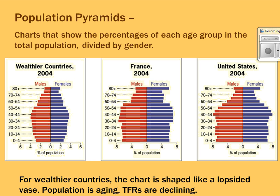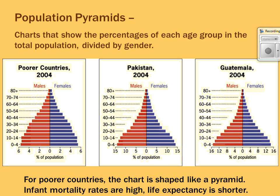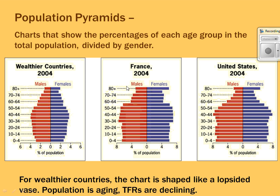Population pyramids for well-developed countries like France and the United States have shorter bases, larger populations in the middle working-age group, and larger populations near the top because people are living longer. Both pyramid types — for poor and wealthy countries — can create a high dependency ratio. In poorer countries, working adults are depended on by large young populations. In wealthier countries, large retired elderly populations depend on the working class. Neither is ideal for a country.